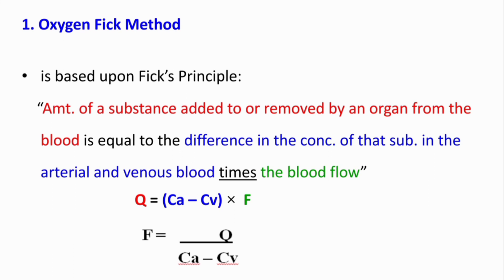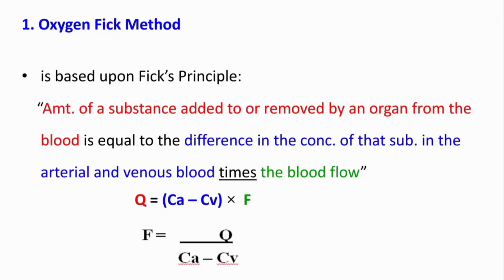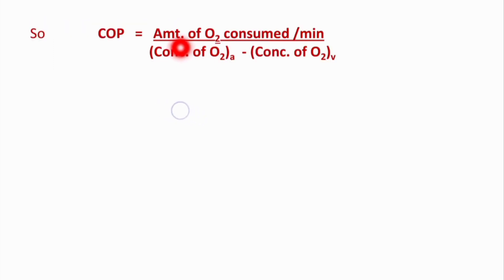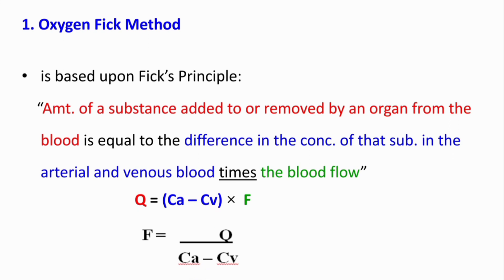Applying this formula to the lungs in pulmonary blood flow, where oxygen is used as the substance consumed, gives us the oxygen Fick method. We rewrite the equation so that cardiac output equals the amount of oxygen consumed per minute divided by the concentration of oxygen in arterial blood (A) minus the concentration of oxygen in venous blood. We have derived cardiac output from the equation F = Q / (CA − CV).